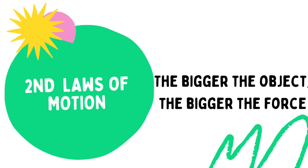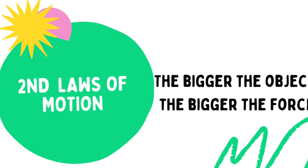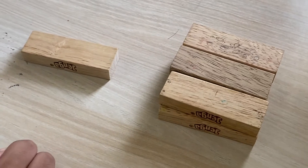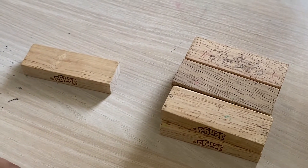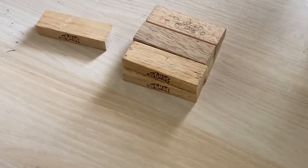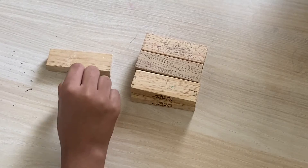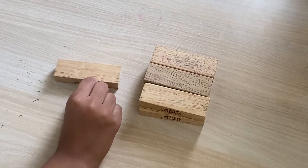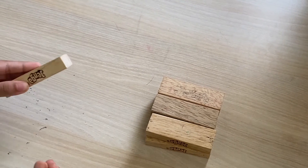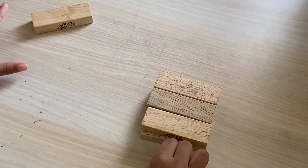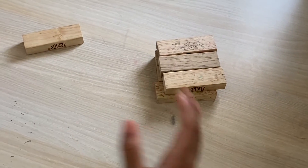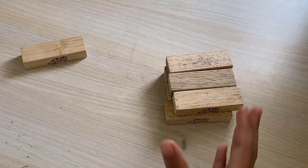Now, the second law of motion. The bigger the object, the bigger the force. I have two different blocks — this is the smaller and this is the bigger. When I push the smaller one, it does not need much force, but if I need to push the bigger one, I need to apply a big force. So, this is the second law of motion.